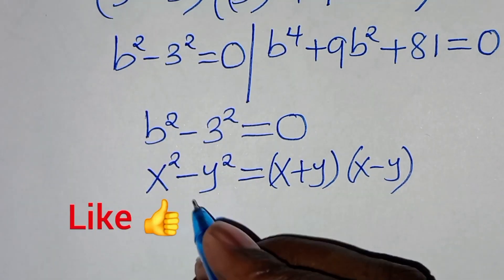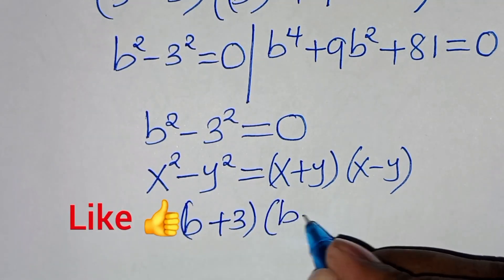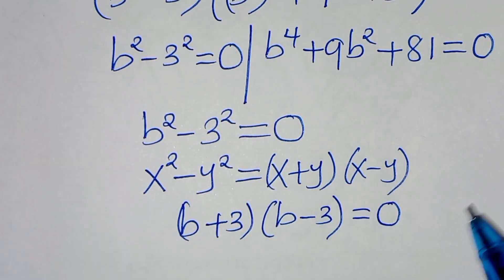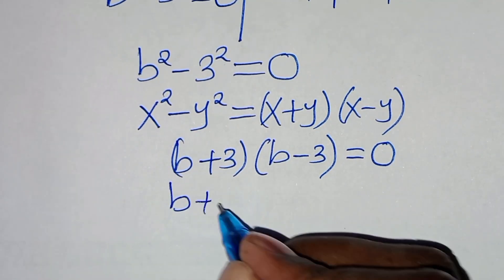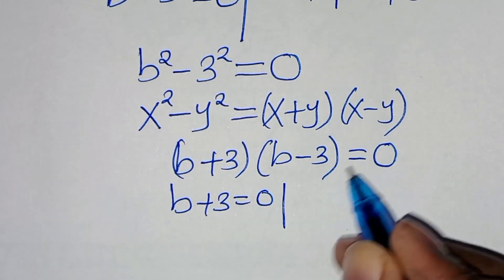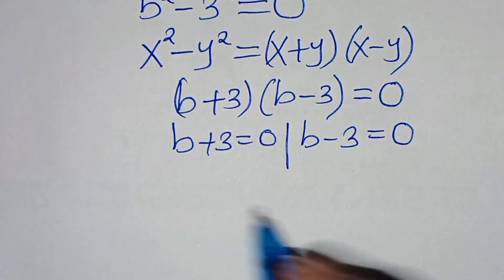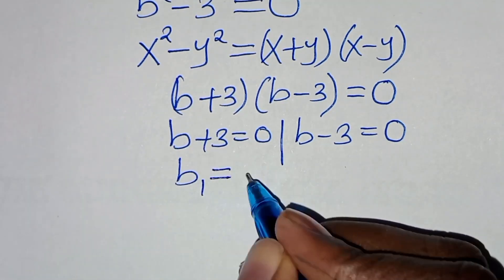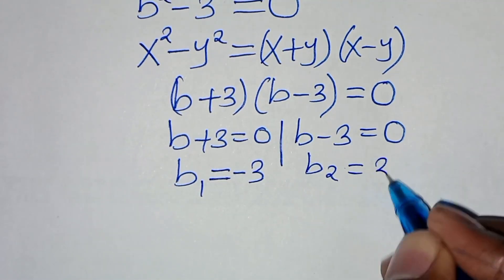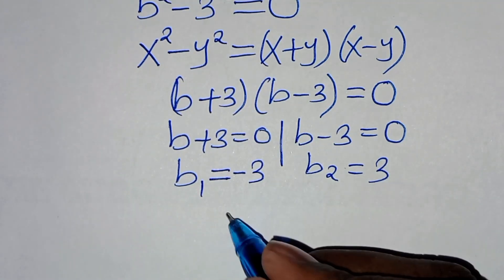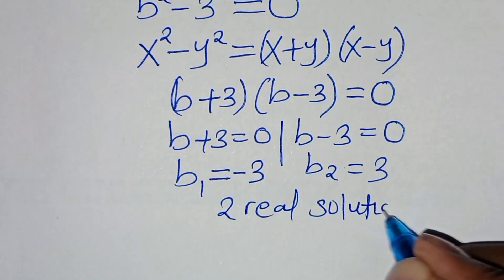So from here we have b plus 3 times b minus 3, equal to 0. This gives us two parts: b plus 3 equal to 0, and b minus 3 equal to 0. So b1, the first value of b, equals negative 3, and b2 equals 3. These are the first two real solutions.